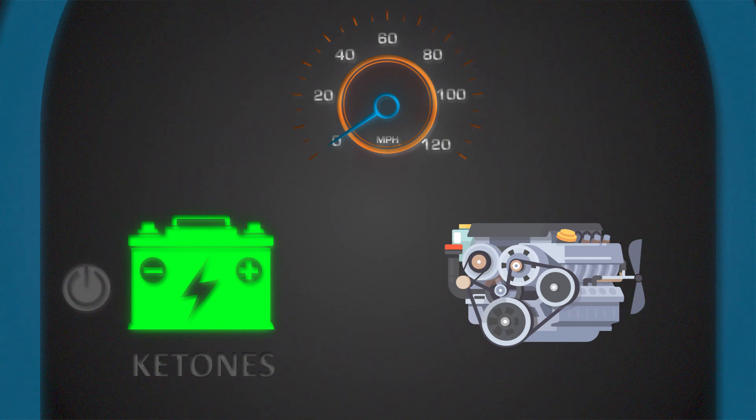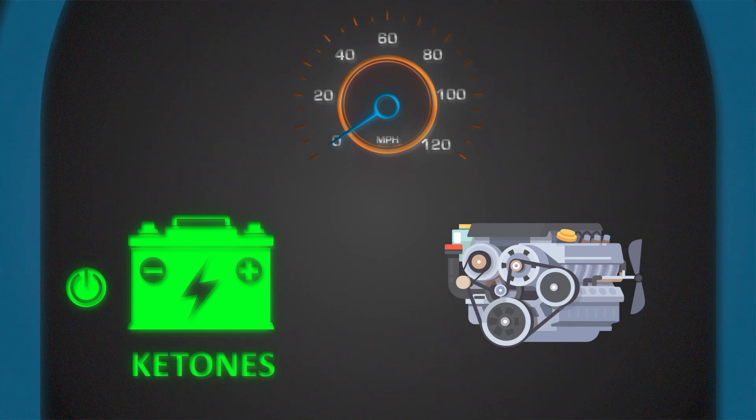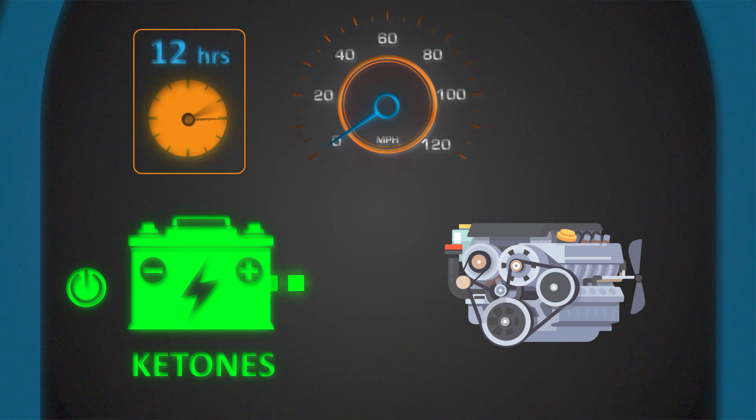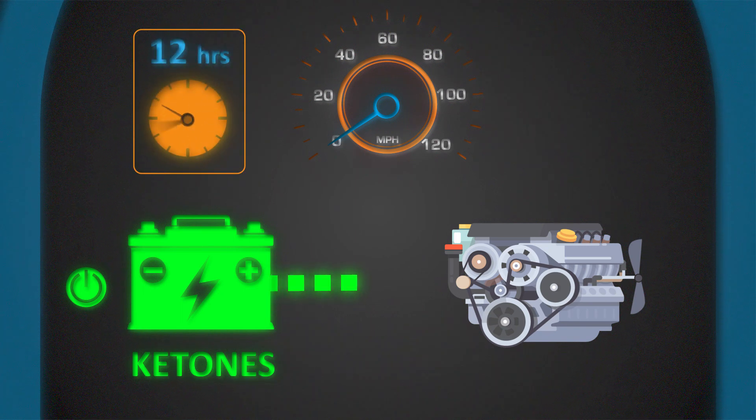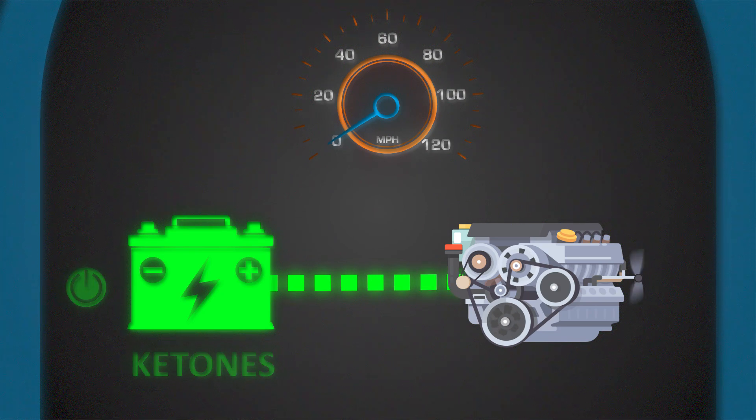Think of this as turning on a metabolic switch as your body shifts from using glucose to using ketones for energy. It typically takes 12 or more hours of fasting, however, for ketone levels in the blood to increase so that the switch fully activates.